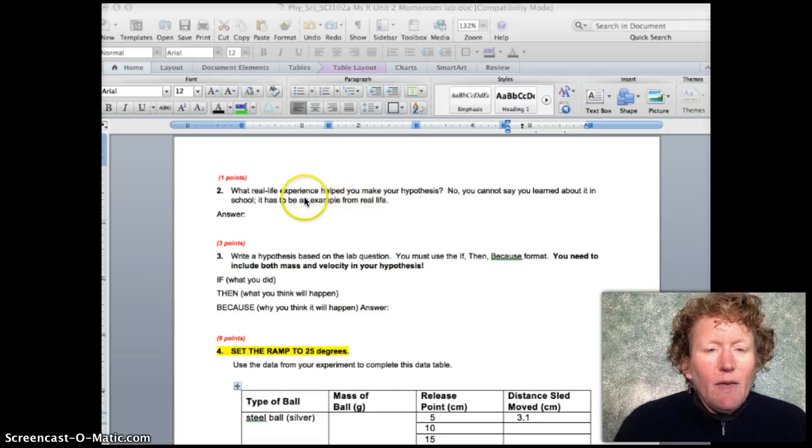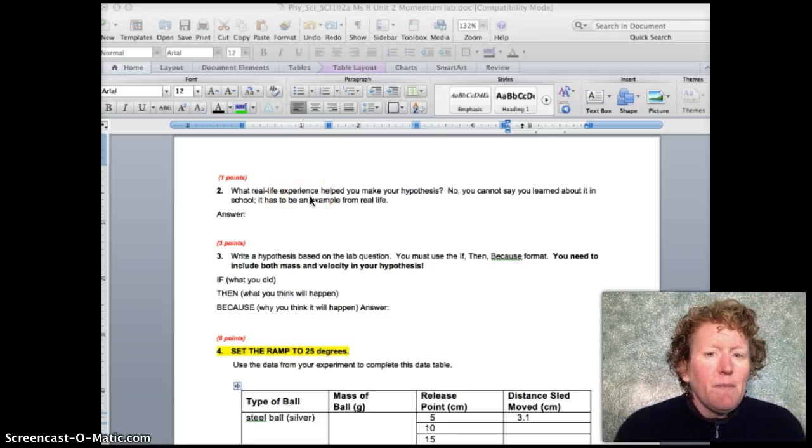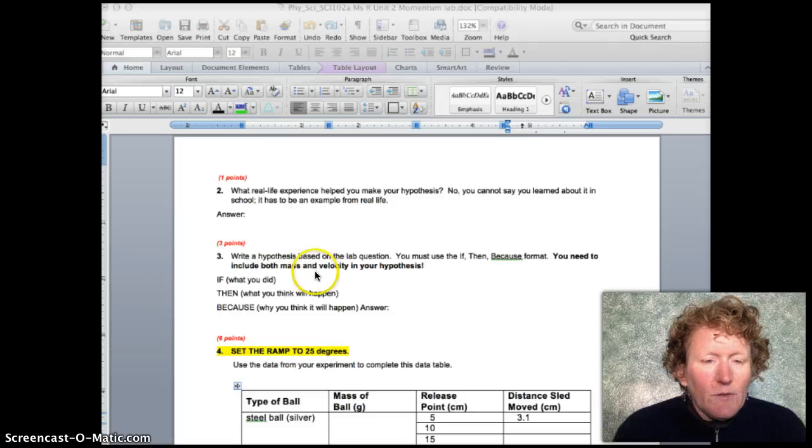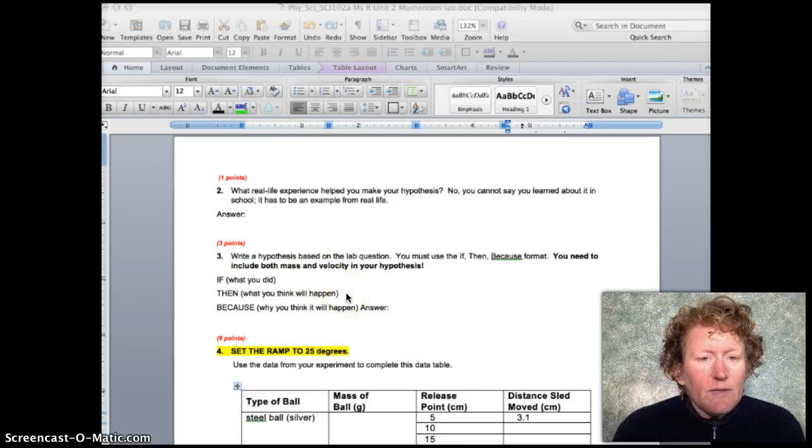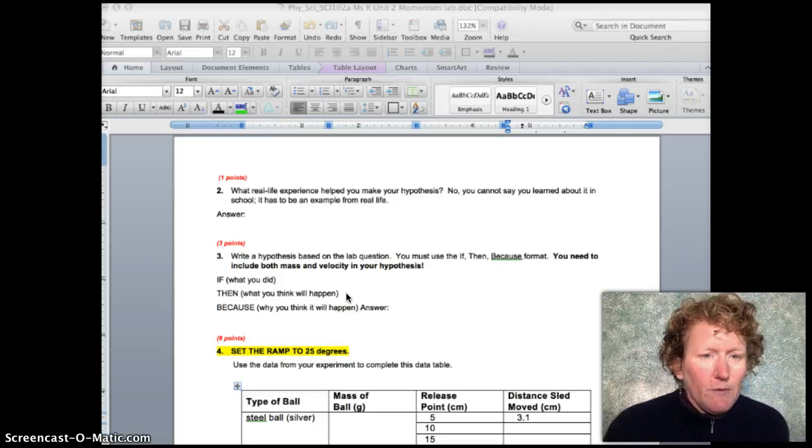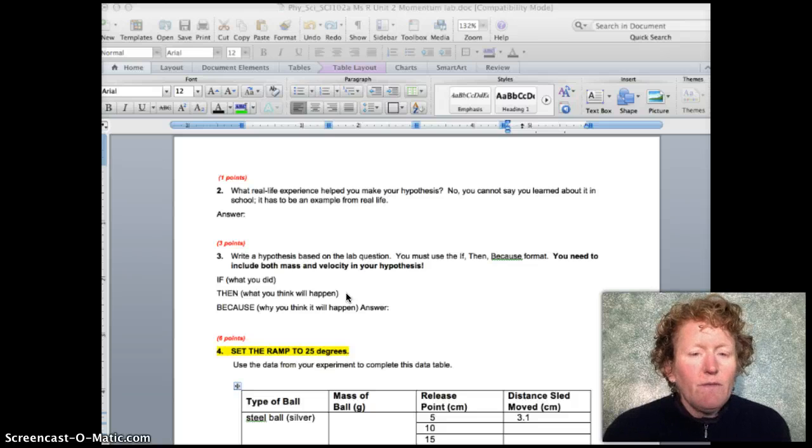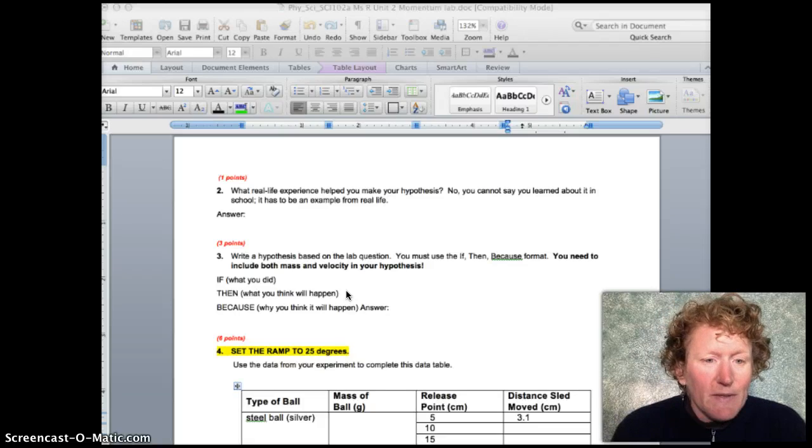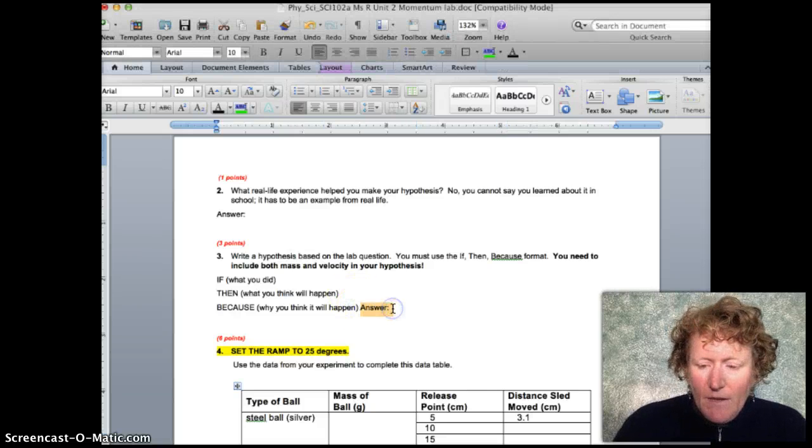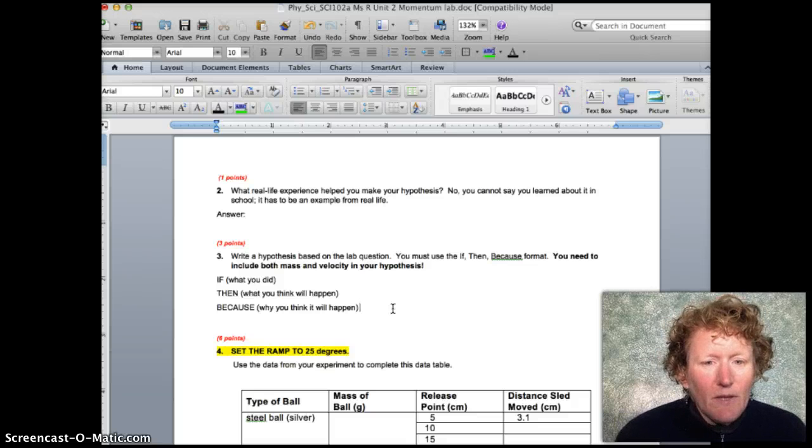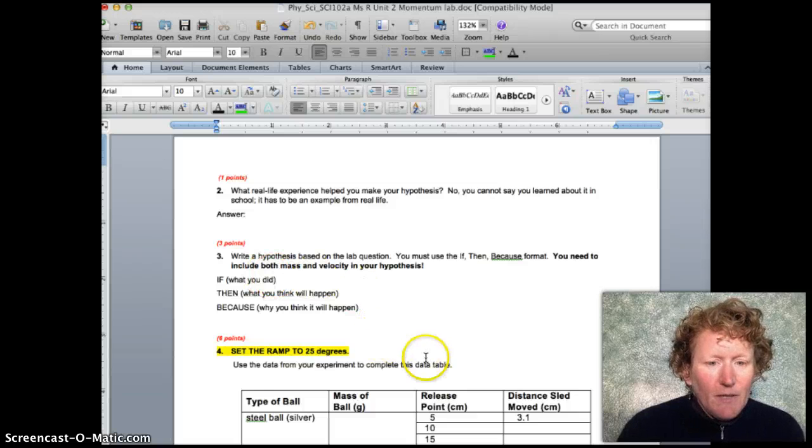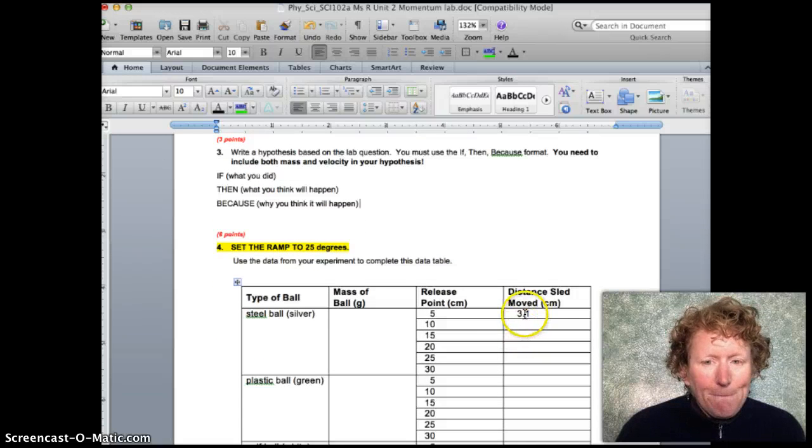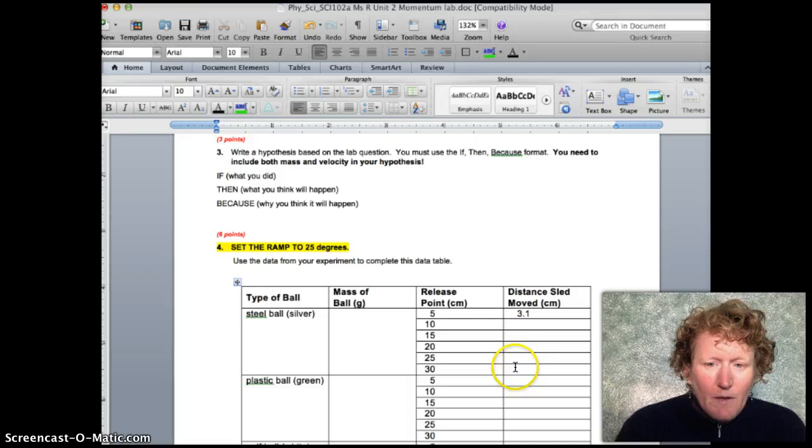Before I continue with question four, I'm going to give you some time. You should pause the video and fill out question two. We talked about some real life experiences that might have helped you make a hypothesis, and you should write a hypothesis using the if-then-because format. If we run a ball down a ramp that slides into a cup, then what's going to happen to the cup? You can make a prediction about which ball might move the cup the furthest, which ball is going to have the most momentum and transfer the most momentum. Because, and then tell why. What do you know about how to calculate momentum? Remember, momentum equals mass times velocity. So use what you know already to fill out question two and three on your lab sheet and continue working in your lab to gather data here.